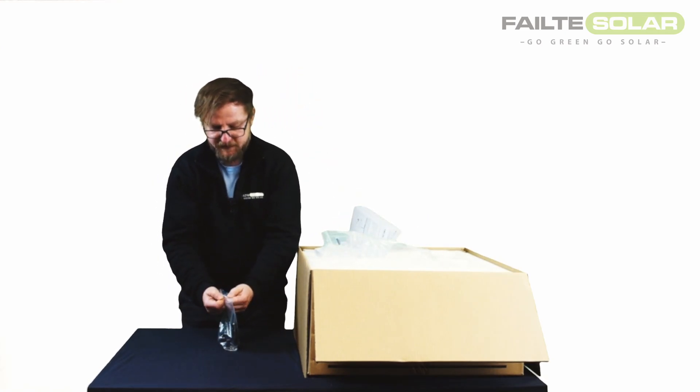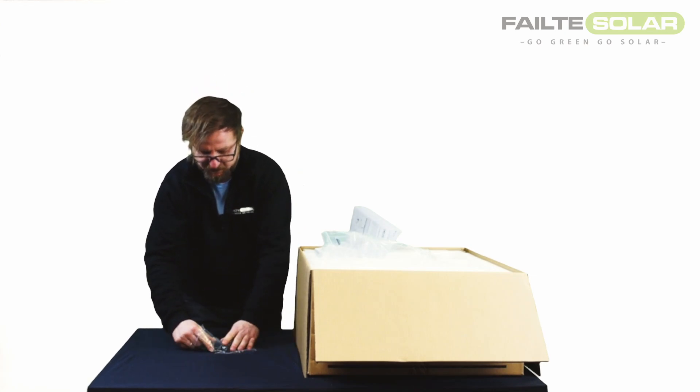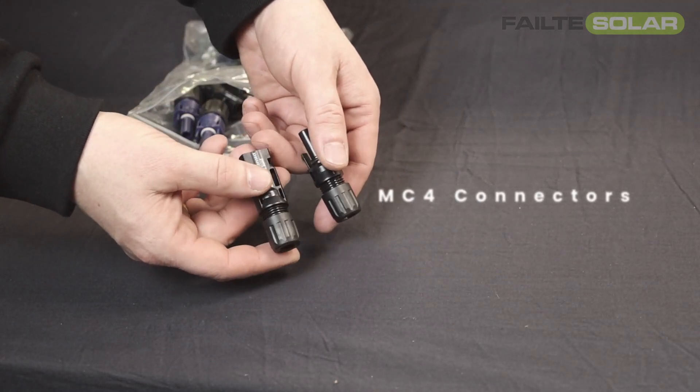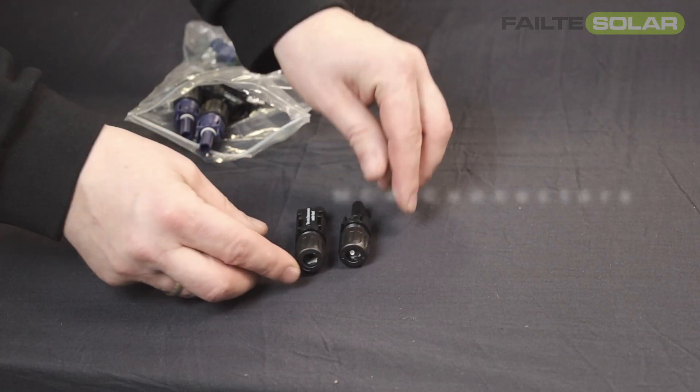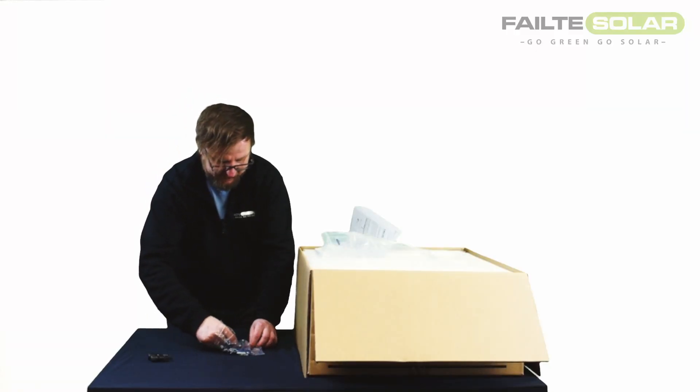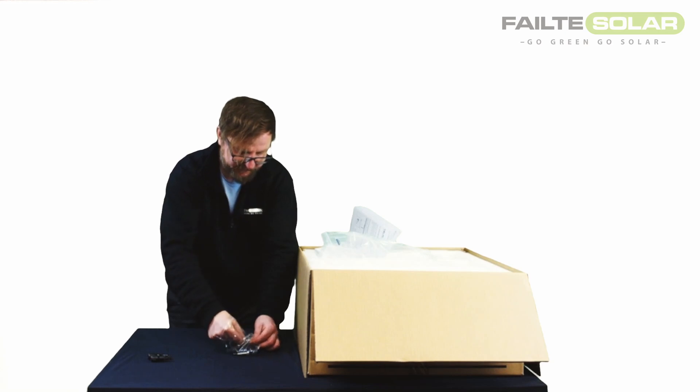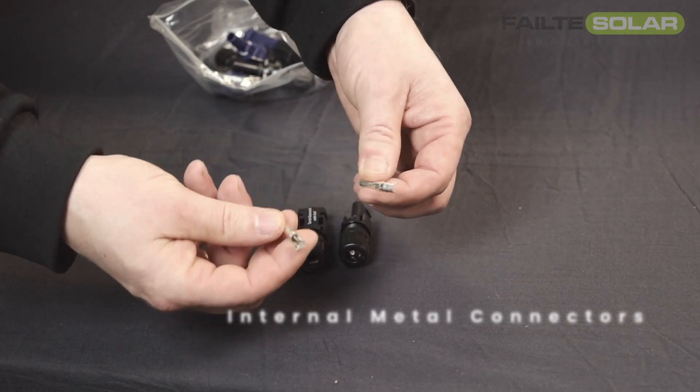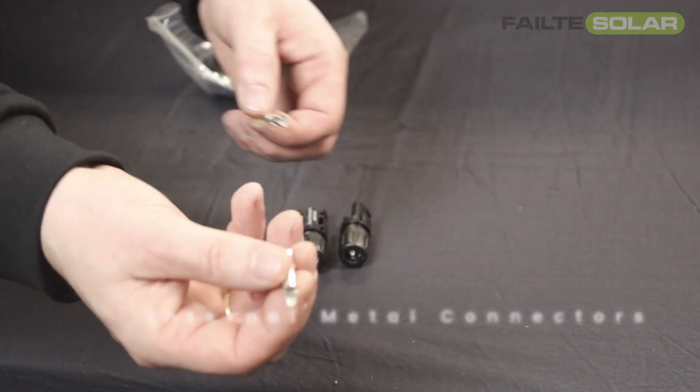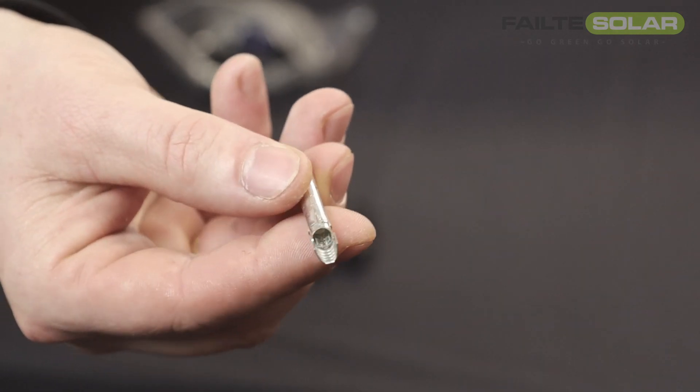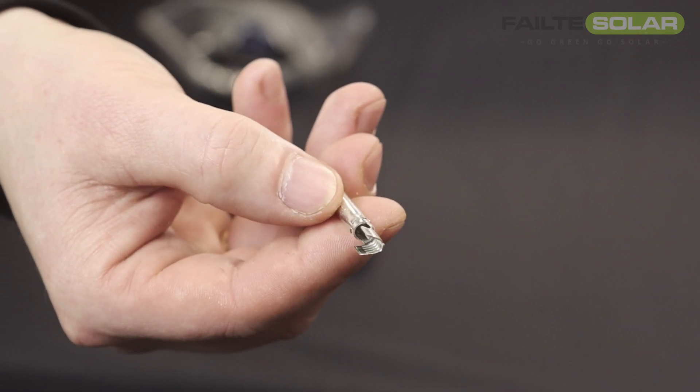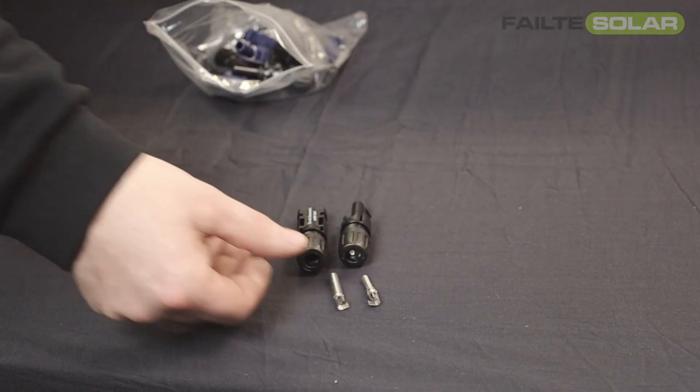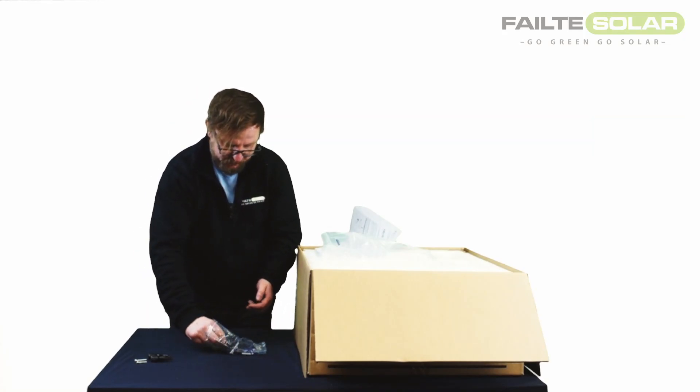And next thing are the MC4s, connectors needed to finish off the job on the PV side. So the black male and female are going to connect your panels into the inverter. Internal metal connectors. Looks like that. Hope you can see that. So these are dedicated inserts for MC4s, for PV side. One type of crimper is supposed to be used for those.